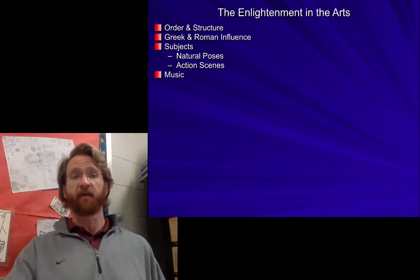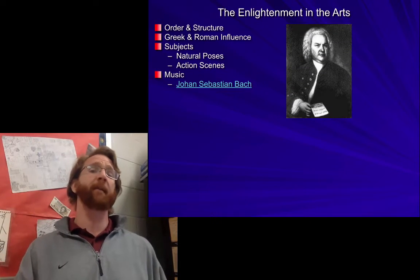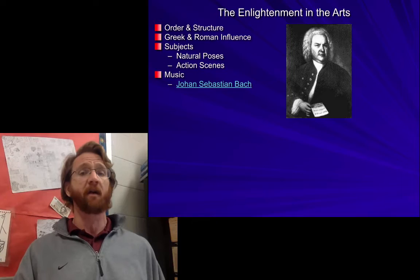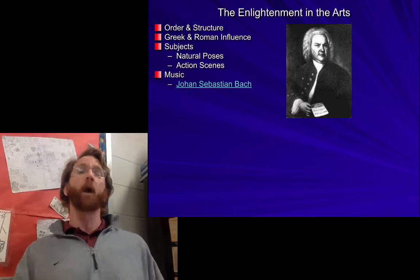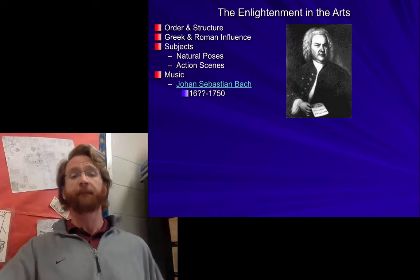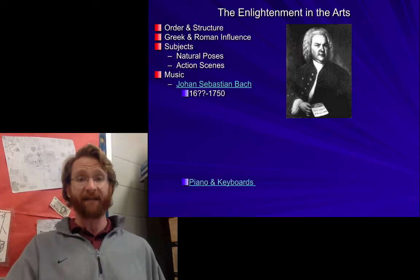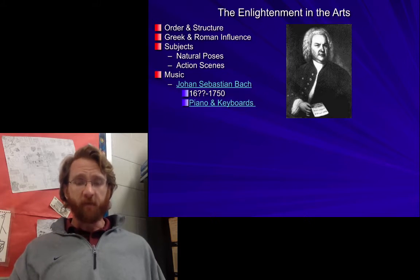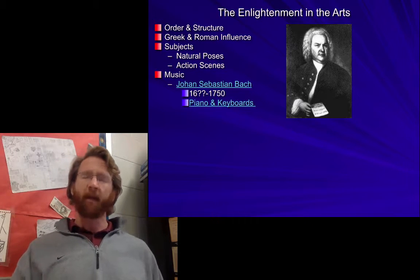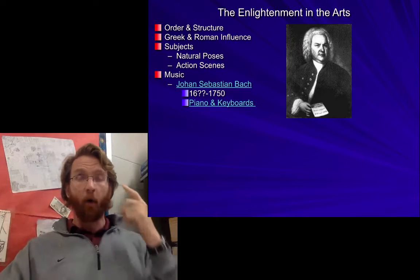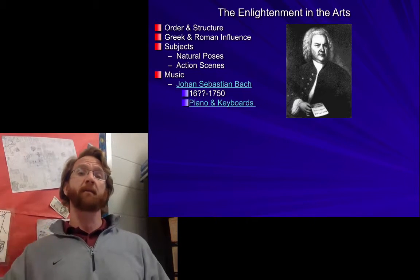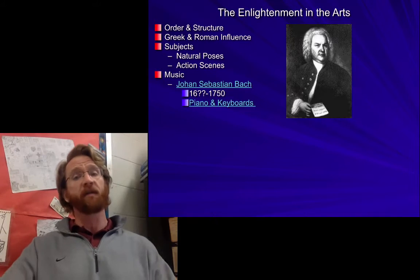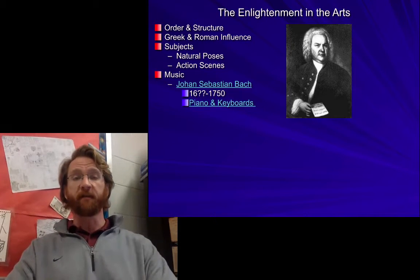A couple of major composers of the era are Johann Sebastian Bach — this is what we generally refer to as classical music, though technically some of it isn't classical in terms of era. Bach died in 1750, and he composed most of his work for piano and keyboards. His music was very ordered and logical, with themes repeating themselves, going forward then going back and repeating with slight differences. You will listen to those today in class.